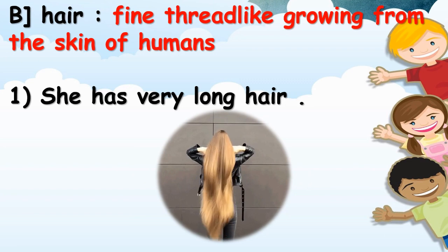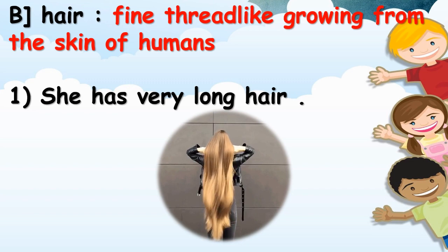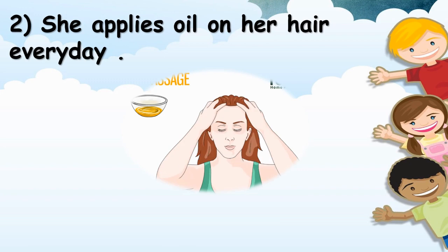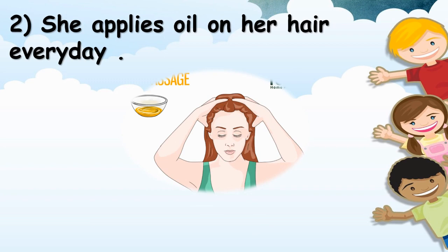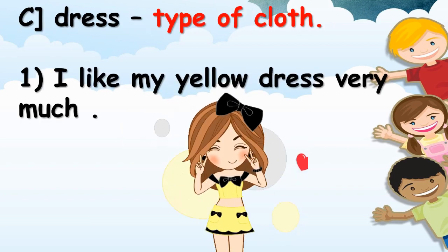New word is hair. The meaning of hair is fine thread-like growing from the skin of humans. Sentence: She has very long hair. Next sentence: She applies oil on her hair everyday.